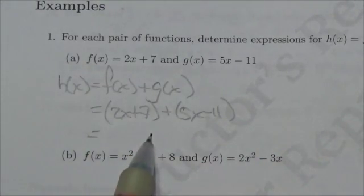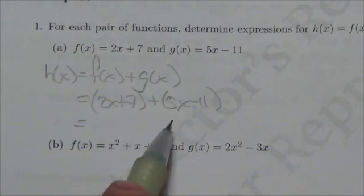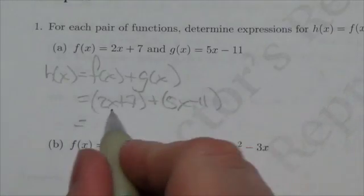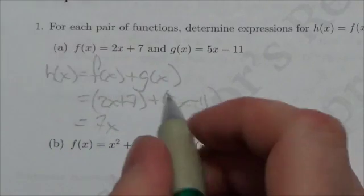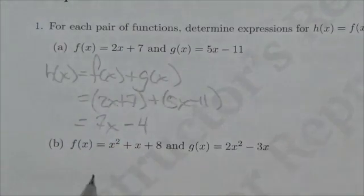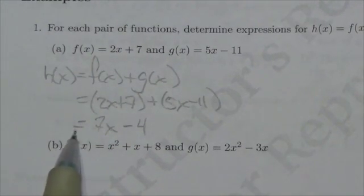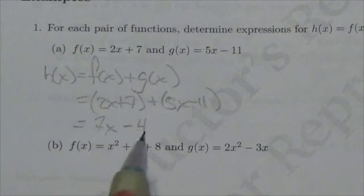When I drop the brackets or parentheses around each of these terms, I'm going to get 2x + 5x, which is 7x. 7 and negative 11 will be negative 4. So the h(x) that I'm defining here will be 7x - 4.